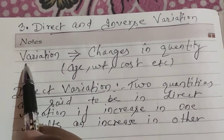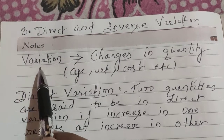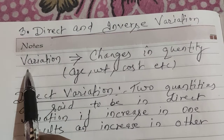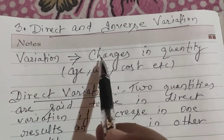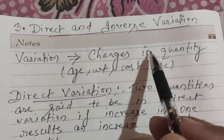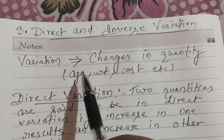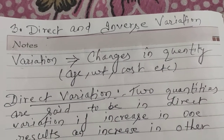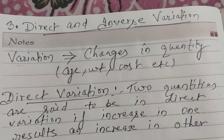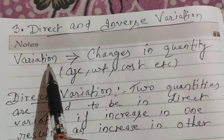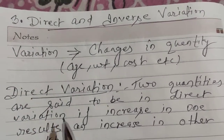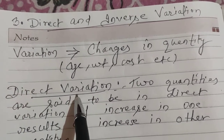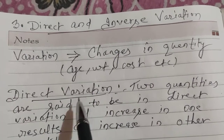Let us start the first term, that is variation. Variation means changes in some quantity — that is age, weight, cost. If there is some change in these quantities, then we say that they come under variation. This is of two types: the first one is direct variation and another is inverse variation.